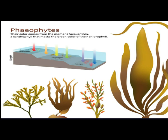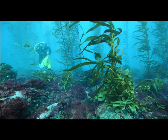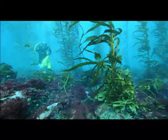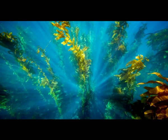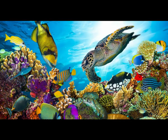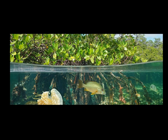Kelps thrive in cold, nutrient-rich waters. Because kelps attach to the seafloor and eventually grow to the surface, they rely on sunlight to generate food and energy. Kelp forests are always coastal and require shallow, relatively clear water. Generally speaking, kelp live further from the tropics than coral reefs, mangrove forests, and warm water sea grass beds.